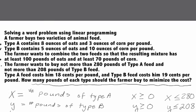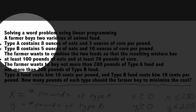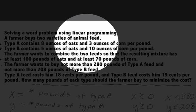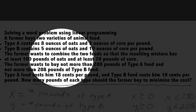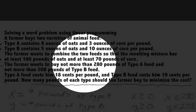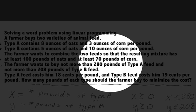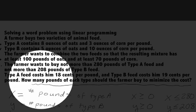We have a problem where a farmer buys two varieties of animal feed: type A and type B. Each type contains ounces of oats and ounces of corn. The farmer wants to combine the two feeds so that there is at least 100 pounds of oats and at least 70 pounds of corn in the mixture. The farmer also wants to buy not more than 280 pounds of type A and no more than 208 pounds of type B.